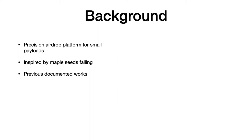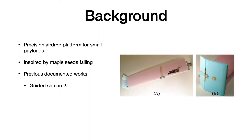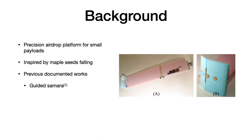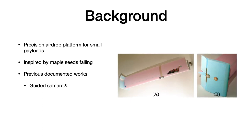Some of the previous works include the guided Samara which attempted to use a vertical fin at the end of the wing. Its experiments were inconclusive due to a number of reasons and did not achieve directional control.